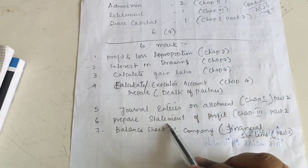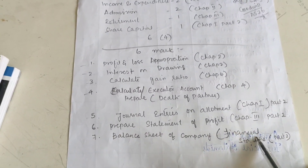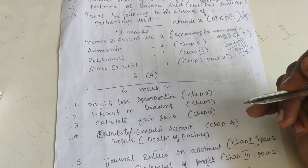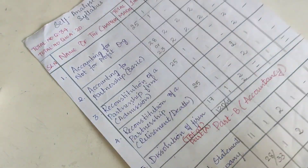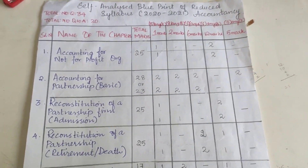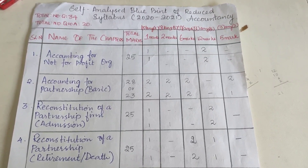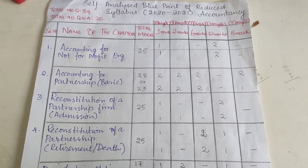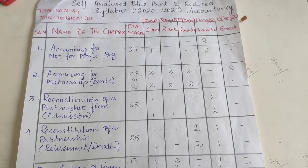You will also need to make a statement of profit and a balance sheet of a company, which is from Financial Statements. These are all the important questions of accountancy. By keeping this in mind, you can easily prepare for your exams and gain a good score. I wish you all the very best. If you found this video helpful, do like, share, subscribe, and comment your suggestions in the box below. Thank you very much.